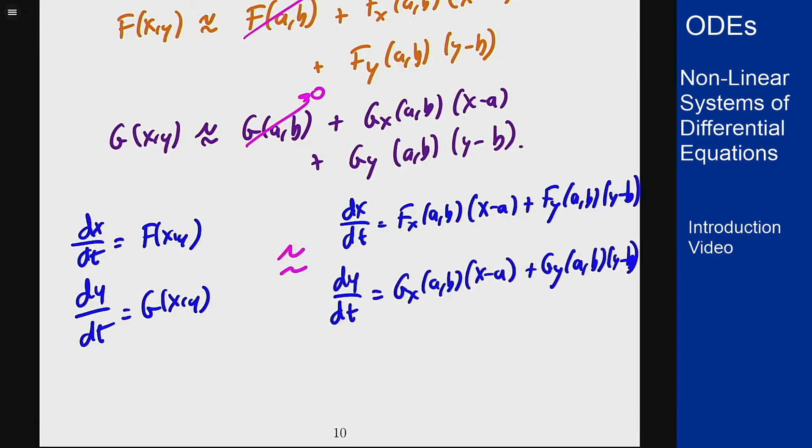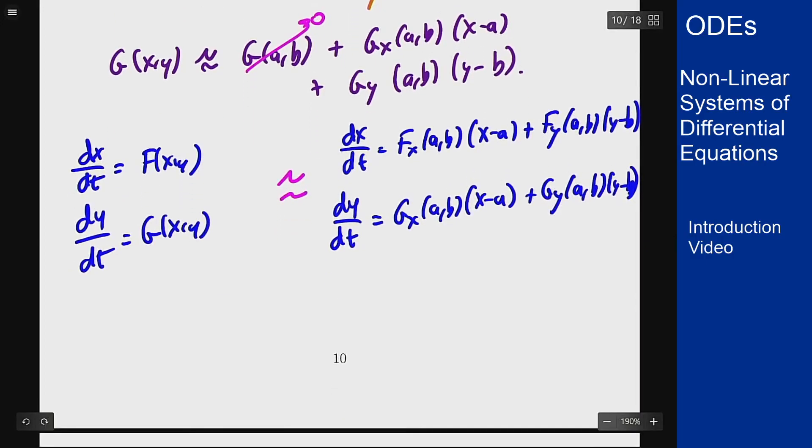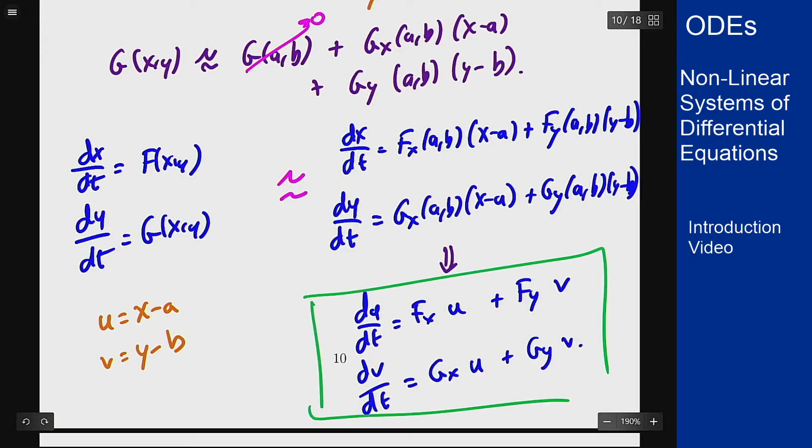As a final step, if I let u = x-a and v = y-b, then dx/dt and du/dt are the same because a and b are constants. This means I can rewrite this system as du/dt = fₓ·u + f_y·v and dv/dt = gₓ·u + g_y·v. This is now a linear constant coefficient system that is autonomous and homogeneous. The idea is to apply our linear analysis techniques to this and use that to determine what's going to happen near the equilibrium solution (a,b).